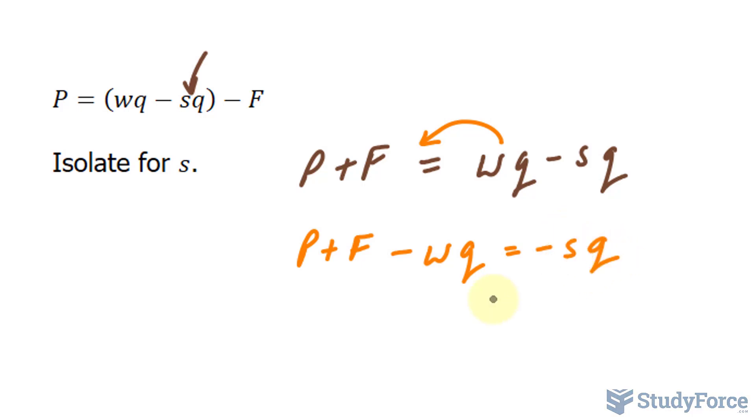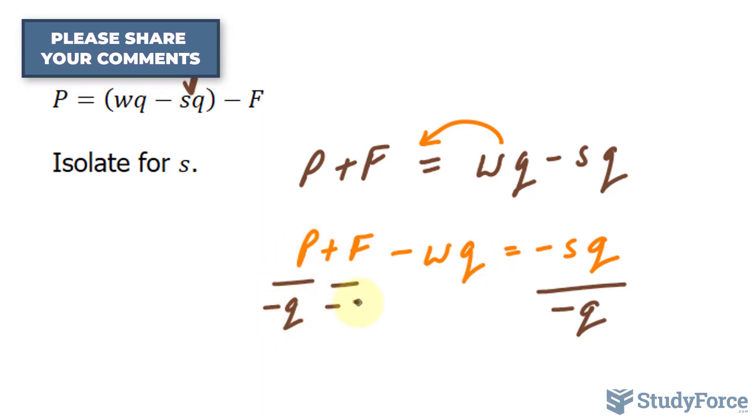P plus F minus WQ is equal to negative SQ. Now what's preventing this S from being all alone and isolated is this negative and this Q, so I can divide both sides by negative Q, and you have to do this for all three of the terms on the left side as well. So negative Q, negative Q, and over here negative Q.